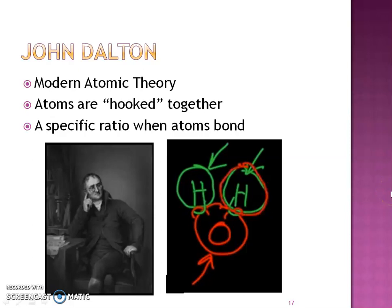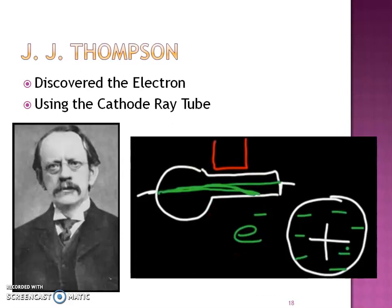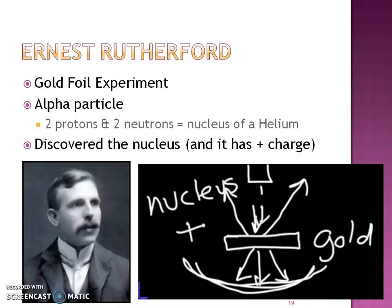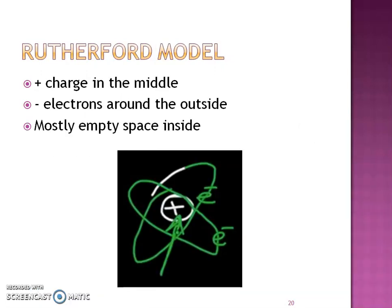John Dalton came up with what's known as the atomic theory today, talking about atoms hooking together in a specific ratio to make bonds. J.J. Thomson's cathode ray tube helped discover the electron. Rutherford used a gold foil experiment with alpha particles hitting a screen — we'll talk more about that in a later section. He really discovered the nucleus and that it has a positive charge, with electrons floating around the outside, and that the atom itself is mostly empty space.